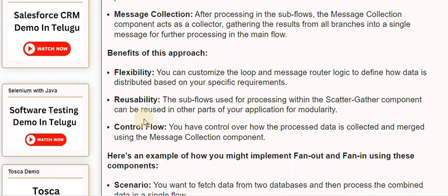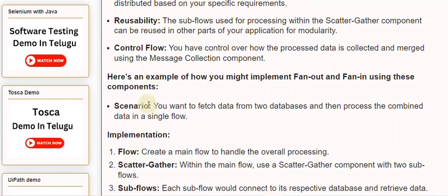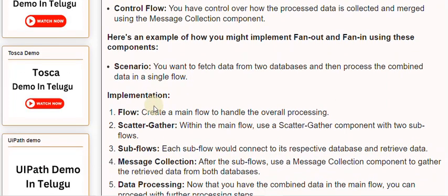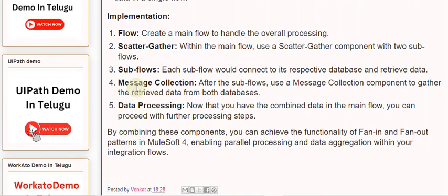Here's an example of how you might implement fan-out and fan-in using these components. Scenario: you want to fetch data from two databases and then process the combined data in a single flow. Create a main flow to handle the overall processing. Within the main flow, use a scatter-gather component with two subflows, where each subflow connects to its respective database and retrieves data. After the subflows, use a message collection component to gather the retrieved data from both databases. Now that you have the combined data in the main flow, you can proceed with further processing steps. By combining these components, you can achieve the functionality of fan-in and fan-out patterns in MuleSoft, enabling parallel processing and data aggregation within your integration flows.